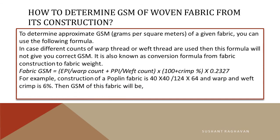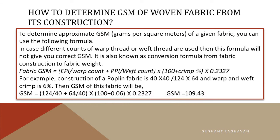For example, the construction of a poplin fabric is 40x40x124x64, and warp and weft crimp is 6%. Then the GSM of this fabric will be: GSM = (124 ÷ 40 + 64 ÷ 40) × (100 + 0.06) × 0.2327 = 109.43.